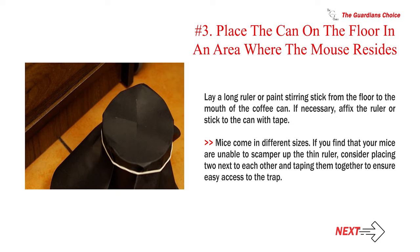Number 3: Place the can on the floor in an area where the mouse resides. Lay a long ruler or paint stirring stick from the floor to the mouth of the coffee can. If necessary, affix the ruler or stick to the can with tape. Mice come in different sizes. If you find that your mice are unable to scamper up the thin ruler, consider placing two next to each other and taping them together to ensure easy access to the trap.